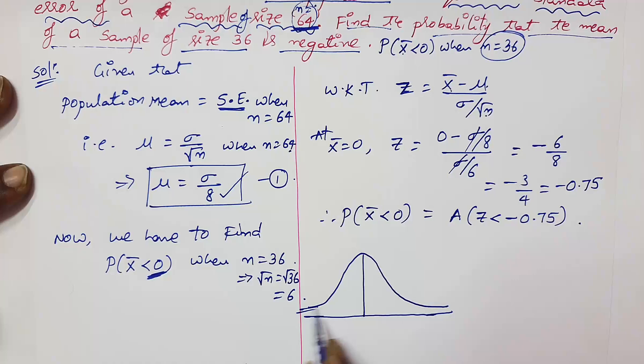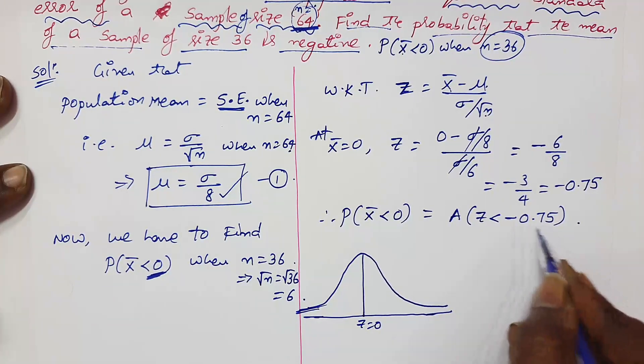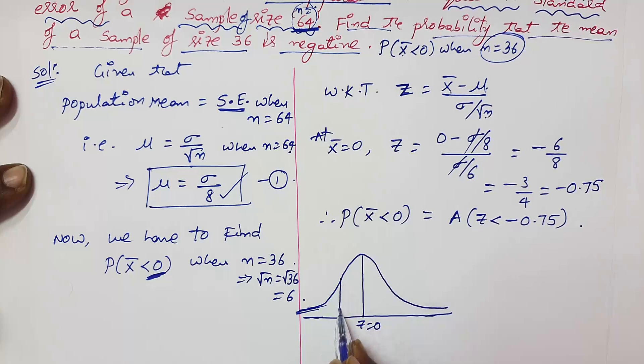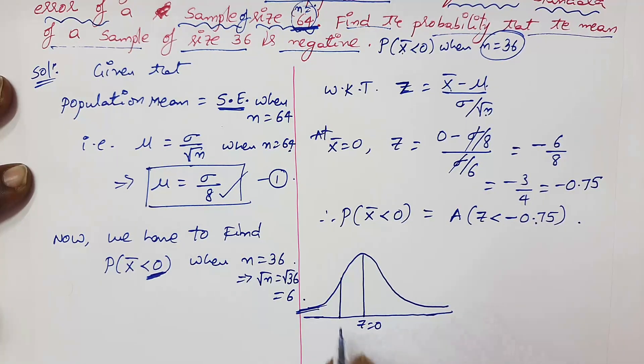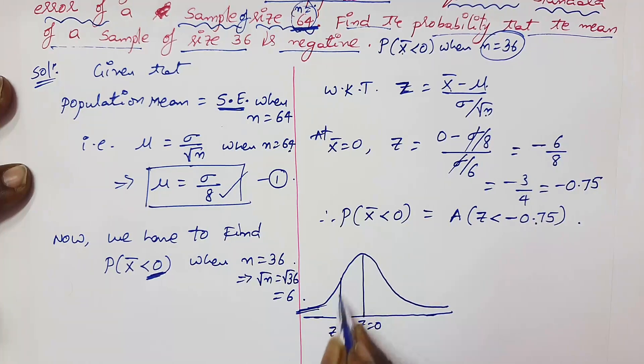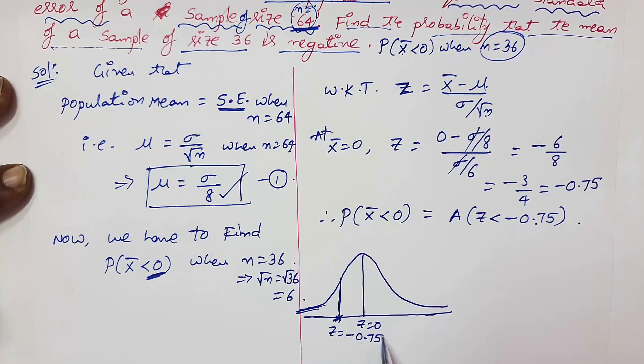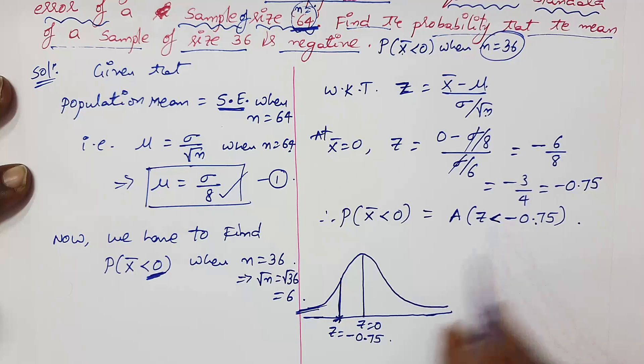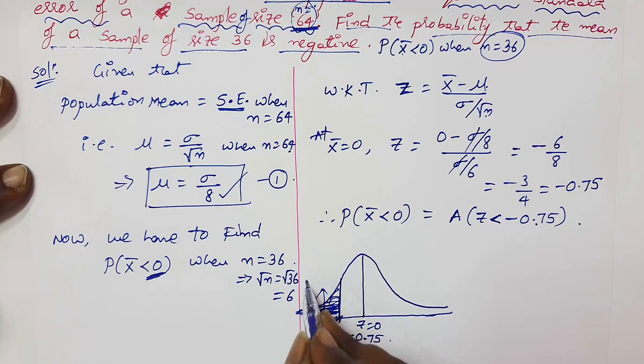Already you know that this is z equals 0 line, and z equals negative 0.75 lies left side of z equals 0. If it is positive, then it lies right side. So approximately you can take this point is 0.75. Since it is left side, you can take scale as negative and shade this area. This is the required area.